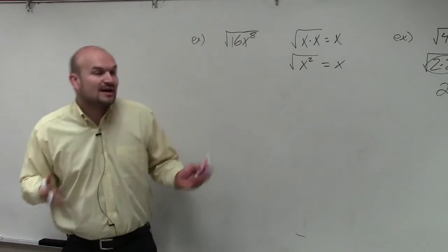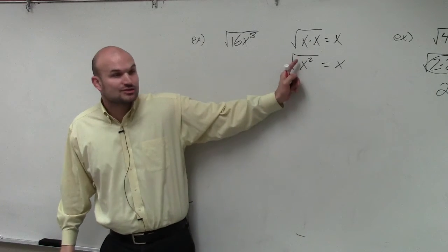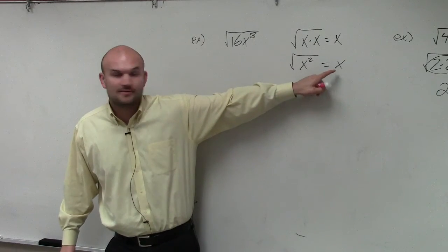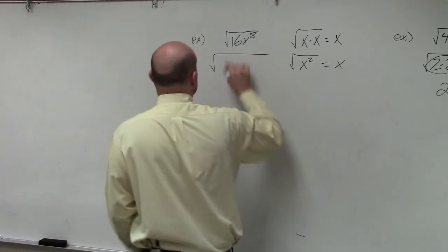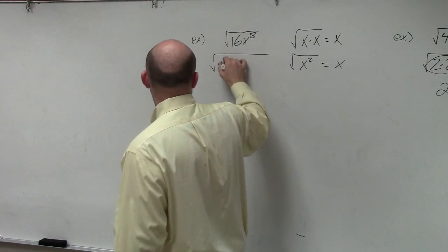So if I can rewrite everything as a square number, I can also take the square root of them, just to leave me that value. So what I do in this case is I break up 16 as 4 squared.